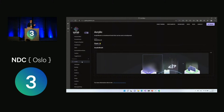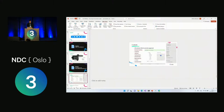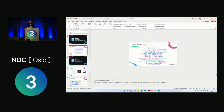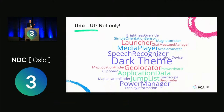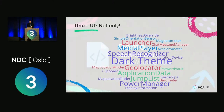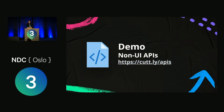Now let me talk about the other side of Uno Platform: non-UI APIs. Beyond the presentation layer, Uno Platform spans many non-UI APIs — for example, SpeechRecognizer for recognizing speech, Accelerometer for sensors, Launcher to launch URLs and URIs, JumpList to create shortcuts for commonly used features, and many more. These features are provided with the same API as on Windows but work on all platforms without any hassle. You can try them at cut.ly/apis — I recommend opening on a mobile phone for most features to be supported.